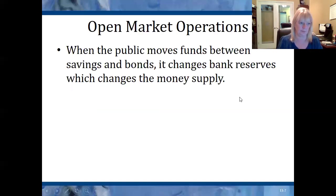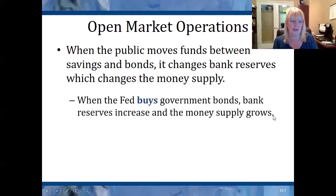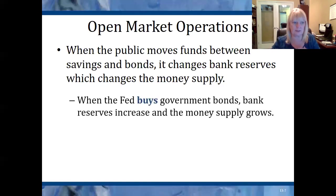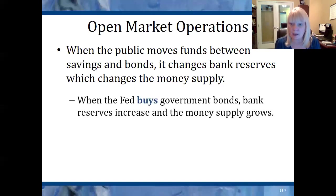Here's how it works. When the Fed buys government bonds, they go to individuals holding the bonds and offer cash in exchange. The bondholder agrees, turns over the bond, and receives money — money they'll then put in the bank, creating a new bank deposit. When there are new bank deposits, the money supply grows. When the Fed buys government bonds, the money supply grows because the bank's reserves grow.